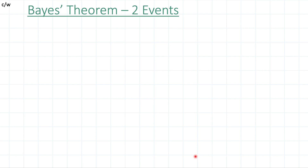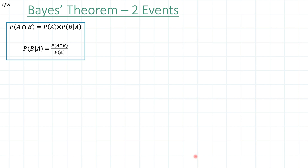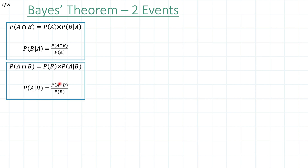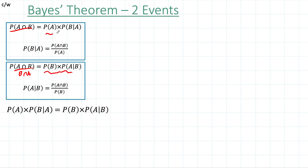We start with a fact that comes from conditional probability. We know the formula for conditional probability, and we are basically rearranging it to get an expression where the intersection is the subject. We can do the same thing with probability of A given B as well. So probability of A given B gives the same expression. Now, if we look here, we get two different expressions for the same thing — A intersect B, which is the same as B intersect A.